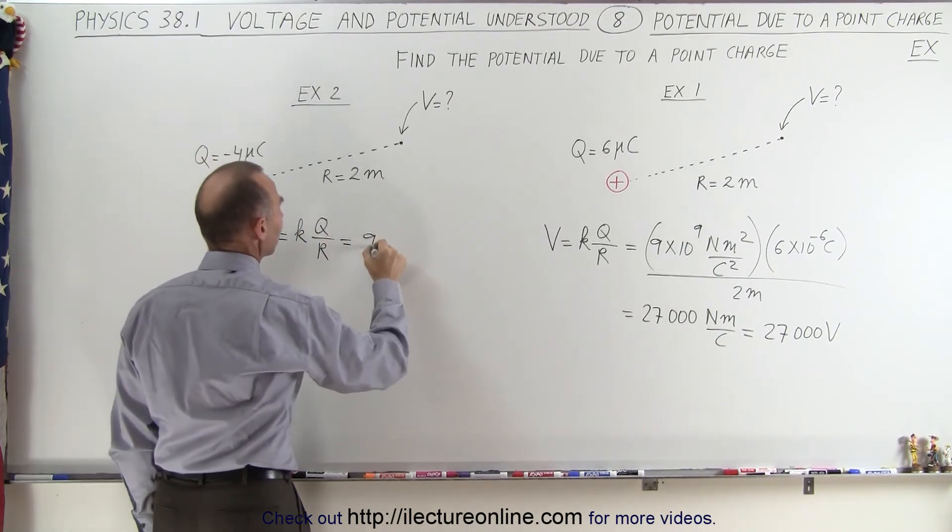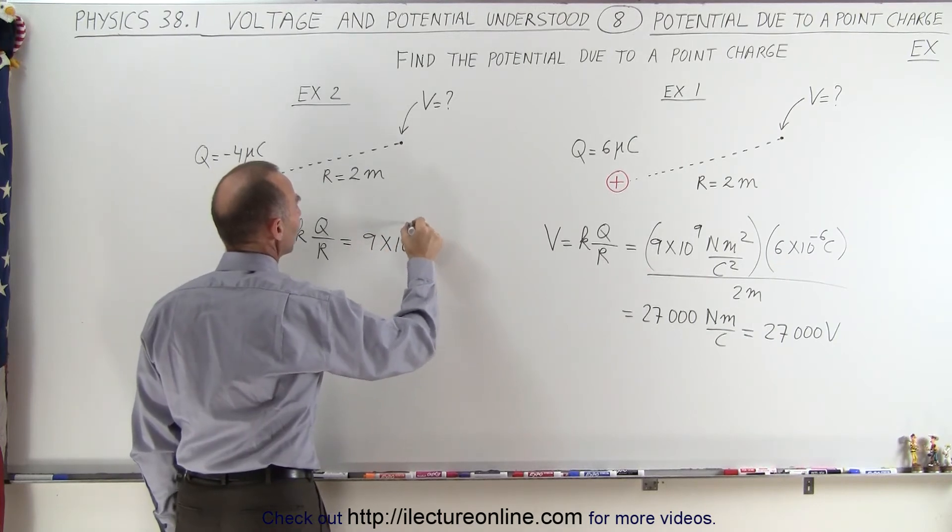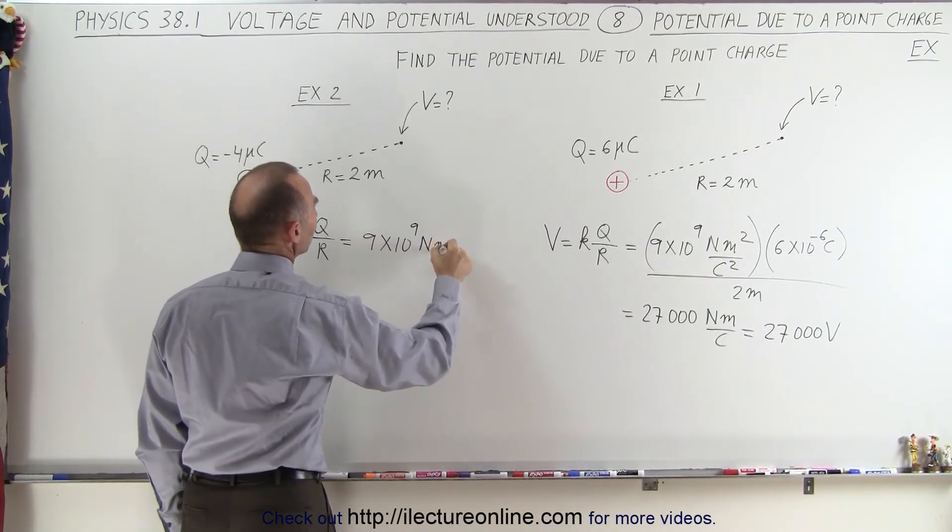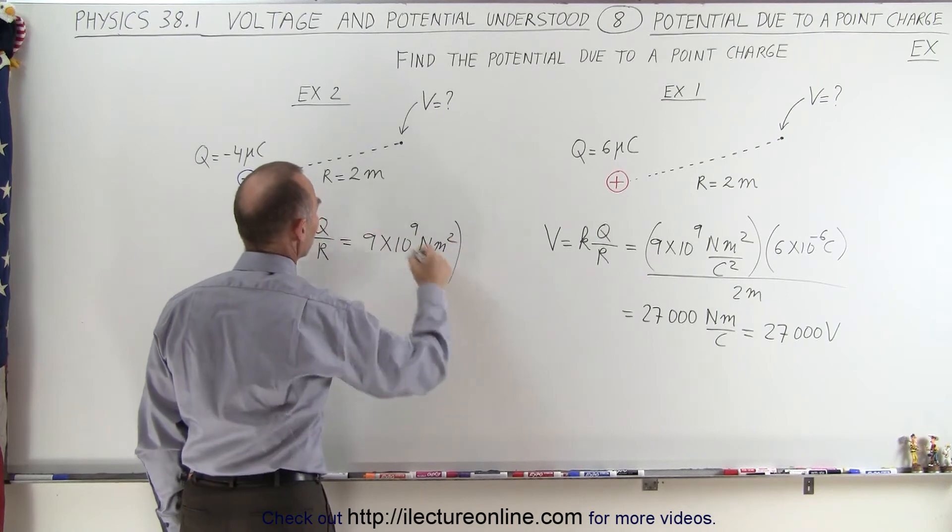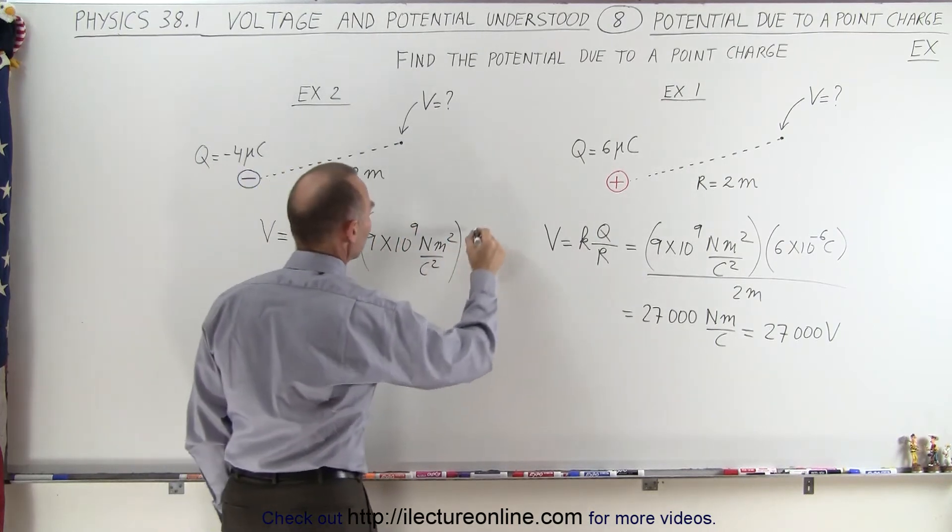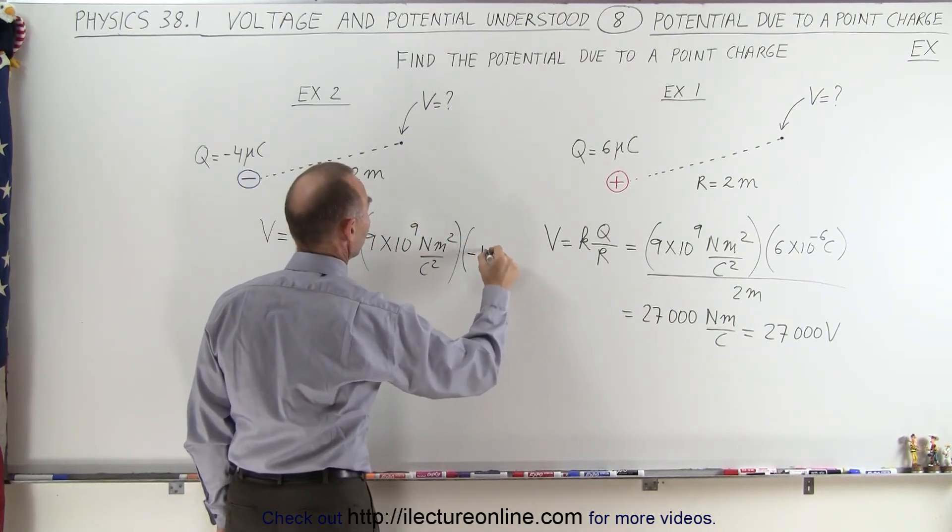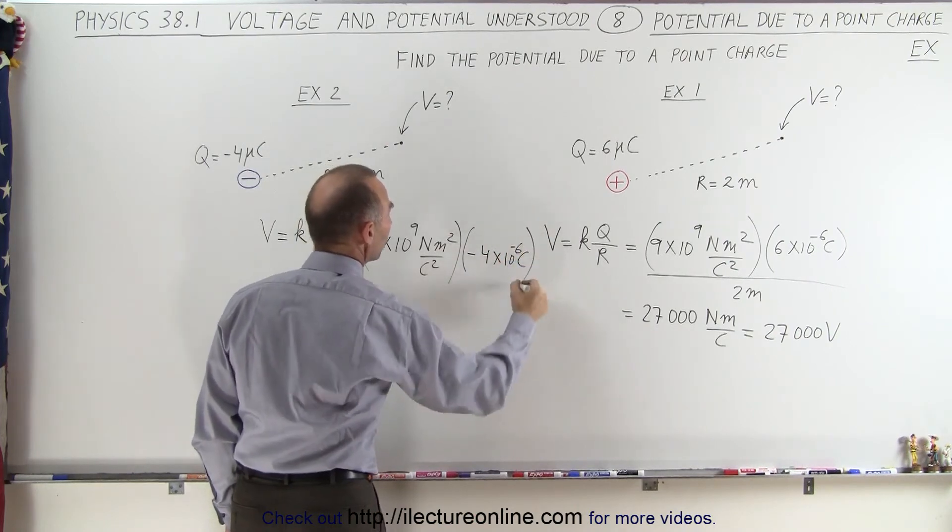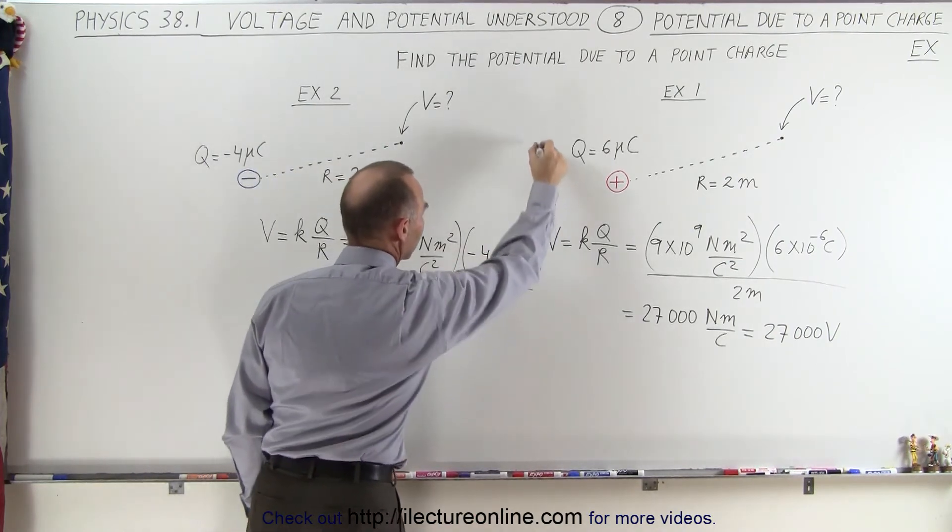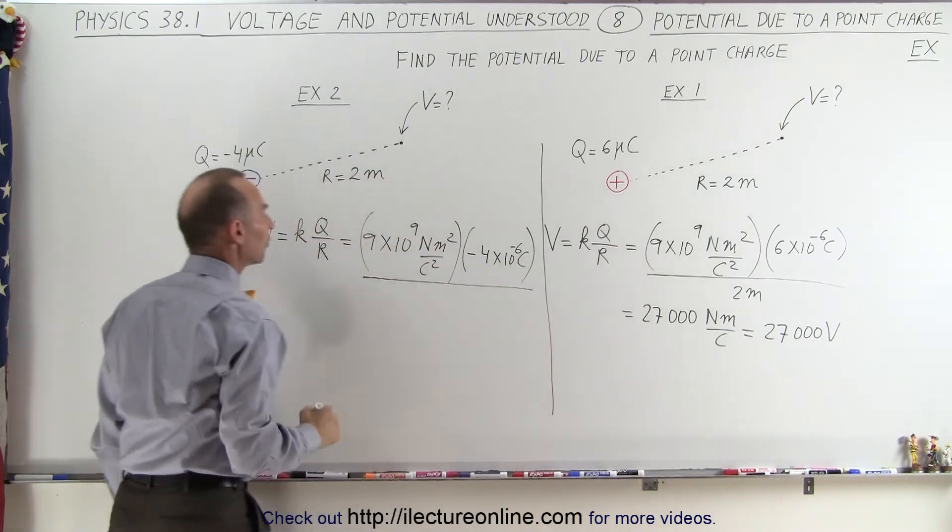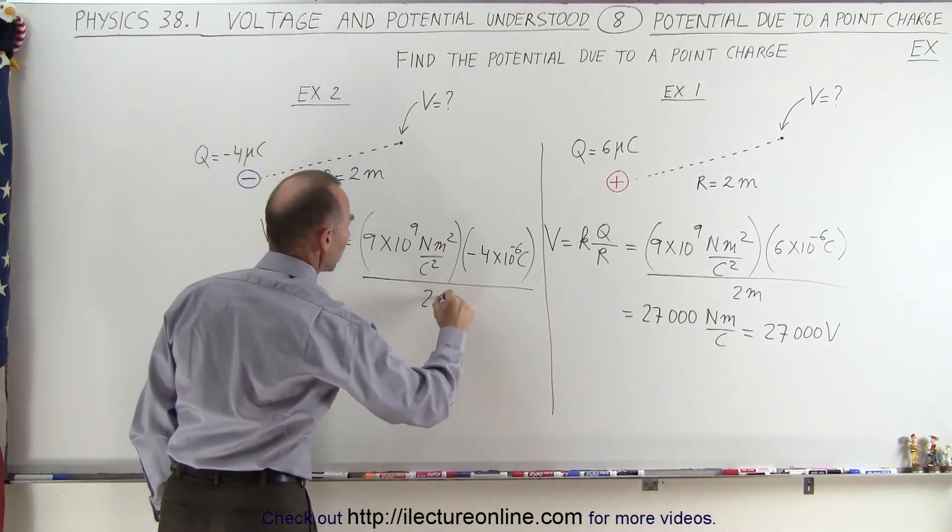So again, that's going to be 9 times 10 to the 9 newton meters squared per coulomb squared, multiplied times the charge, which in this case is minus 4 times 10 to the minus 6 coulombs, all divided by distance of 2 meters.